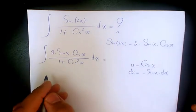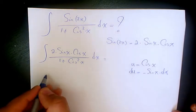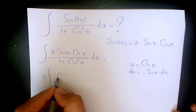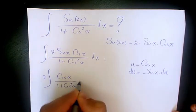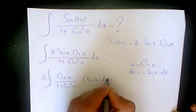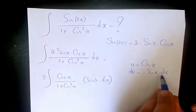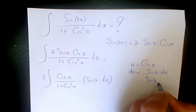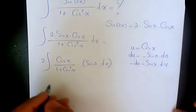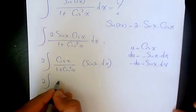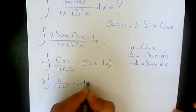So, let's go back in here. We can have 2 out, and then have cosine x over 1 plus cosine squared x. And here, we have sine x dx. So, we know du is negative sine x dx, so it means that sine x dx is negative du. And when we sub it there, we have 2u over 1 plus u squared times negative du.